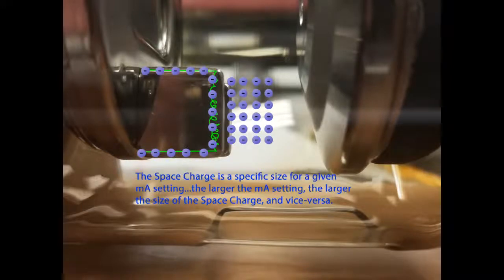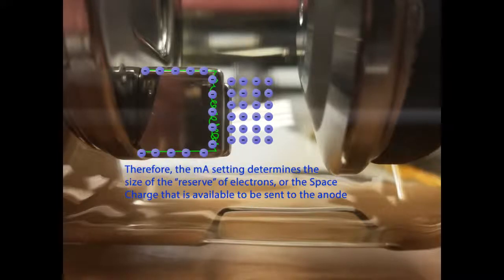The space charge is a specific size for a given mA setting. The larger the mA setting, the larger the size of the space charge, and vice versa. Therefore, the mA setting determines the size of the reserve of electrons, or the space charge that is available to be sent to the anode.